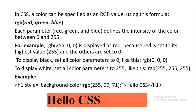In CSS, a color can be specified as an RGB value using this formula. RGB stands for red, green, and blue — these are the primary colors. Each parameter — red, green, and blue — in the RGB color scheme defines the intensity of the color between 0 and 255.